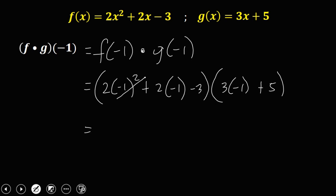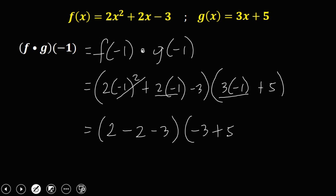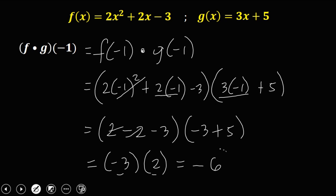Then simplify. Negative 1 squared is positive 1 times 2, it's positive 2. Then 2 times negative 1 is negative 2, then minus 3. Times negative 1 times 3 is negative 3, then plus 5. So 2 minus 2 is 0, minus 3 is negative 3. And negative 3 plus 5 is positive 2. And negative 3 times 2 is negative 6. So the answer is negative 6.